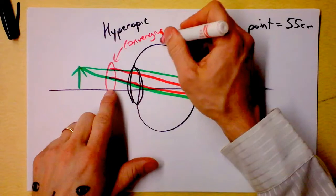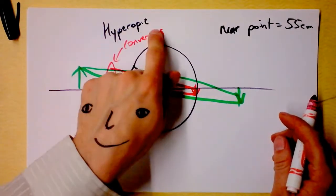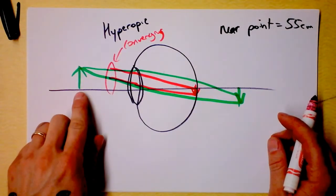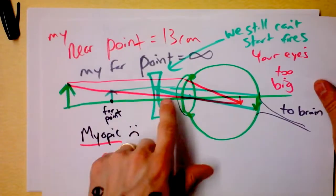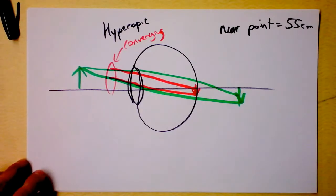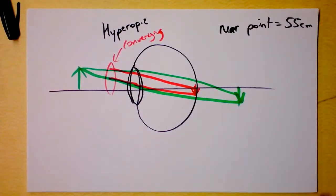So we need a converging lens in order to help people who cannot see things that are close. And we need a diverging lens in order to help people who cannot see things that are far away. Anything else I should say about that? Well, we can do some calculations, but I don't think this is the right video for that.